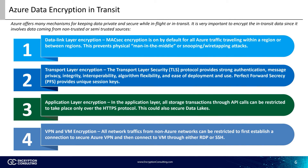In fact, HTTPS is the only protocol that is supported for data lake store REST interfaces. Finally, there are VPNs and VMs. All network traffic from non-Azure networks can be restricted to first establish a connection to a secure Azure VPN, and then connect to the VMs through secure protocols such as RDP or SSH. RDP can be used for Windows and Linux VMs. However, SSH can only be performed on Linux VMs.